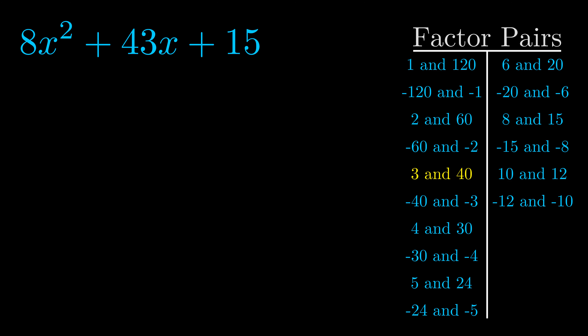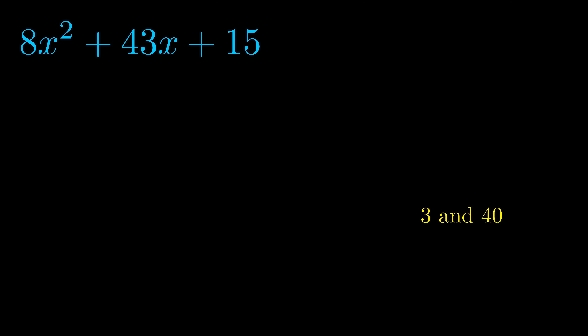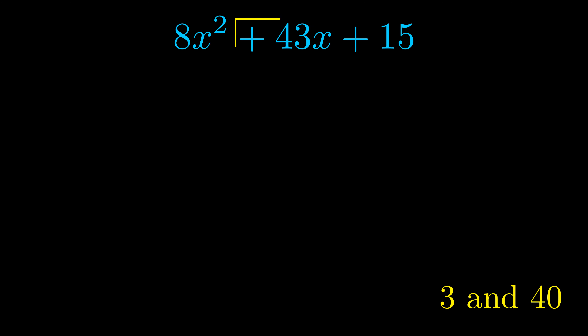And really this is the only factor pair that we need. Now once we have this factor pair, what we want to do is use it to split up the b value. Notice how I'm going to keep my first term and my last term completely unchanged. It is only this b term highlighted in yellow that gets expanded into this correct factor pair.